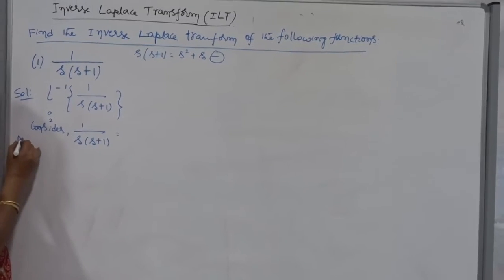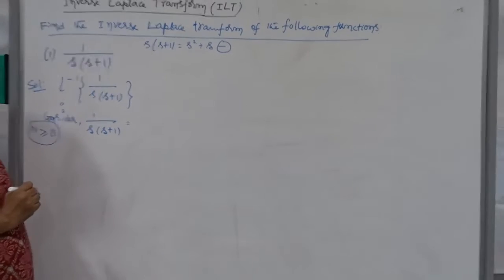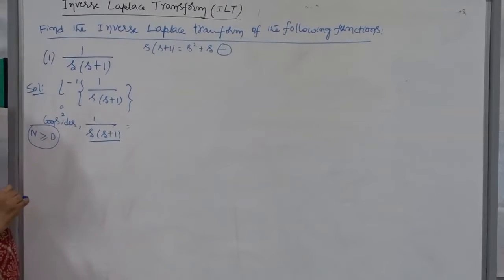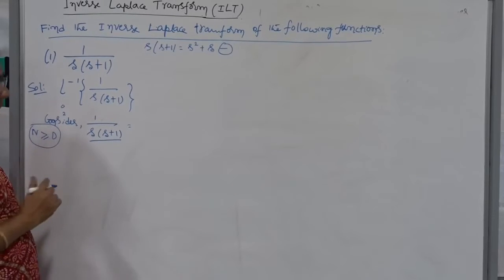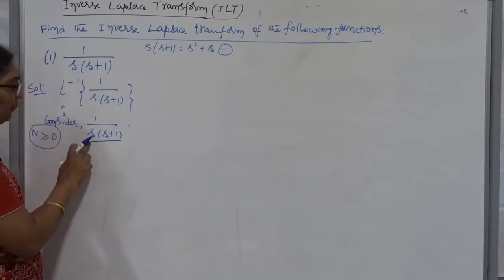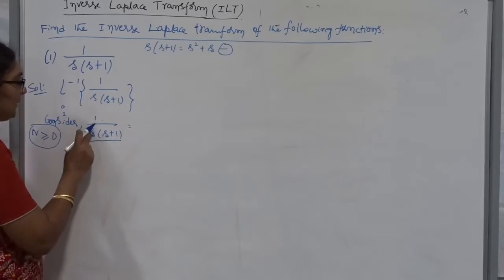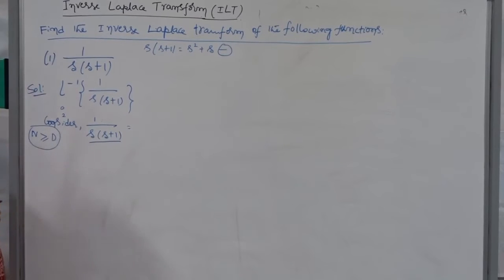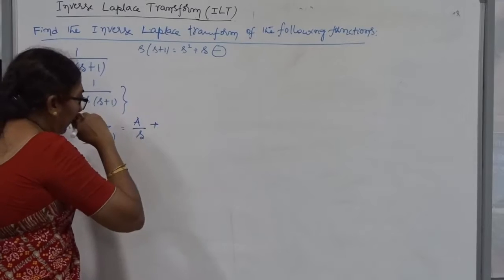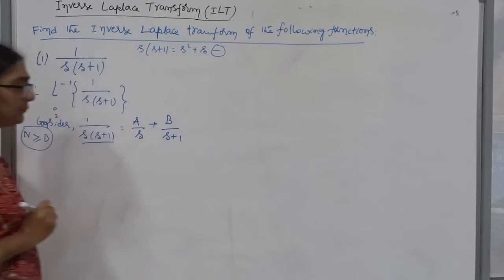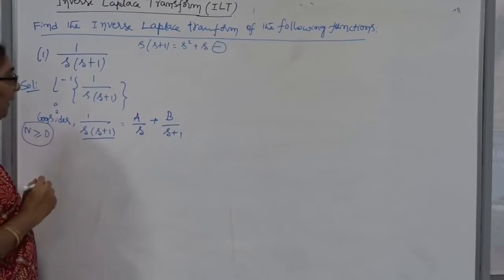Otherwise, if it is improper, the degree of the numerator is greater than or equal to the degree of the denominator. But anyway, this is a proper fraction, so I am going to obtain the partial fraction. Observe the denominator carefully — both factors are linear because the power of S is 1. Also, they are non-repeated because S has power 1 and S plus 1 has power 1. Therefore, these are non-repeated linear factors. From the partial fraction, this can be written as A by S plus B by S plus 1.